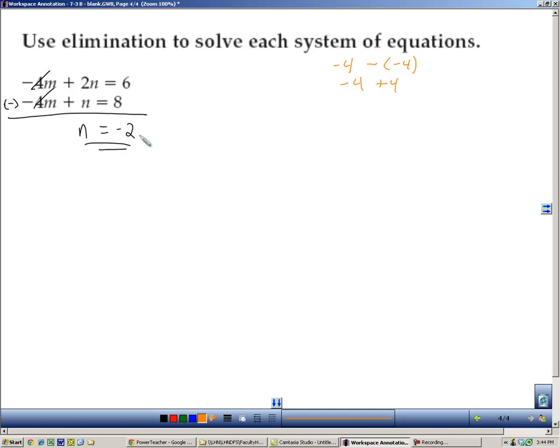So we plug that in, I'll go with the bottom one. Negative 4m minus 2, because you make it plus a negative 2, so then we'll add a 2. So negative 4m equals 10, divide both sides by negative 4, and you get m equals negative 5 halves.